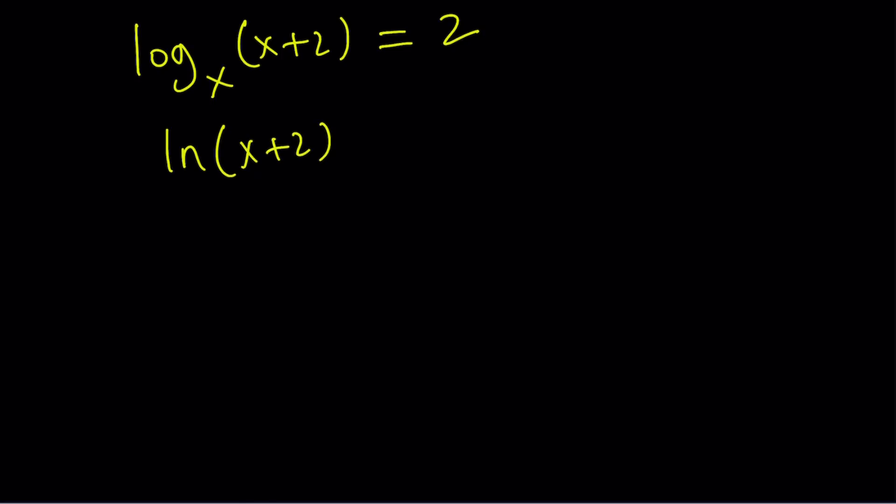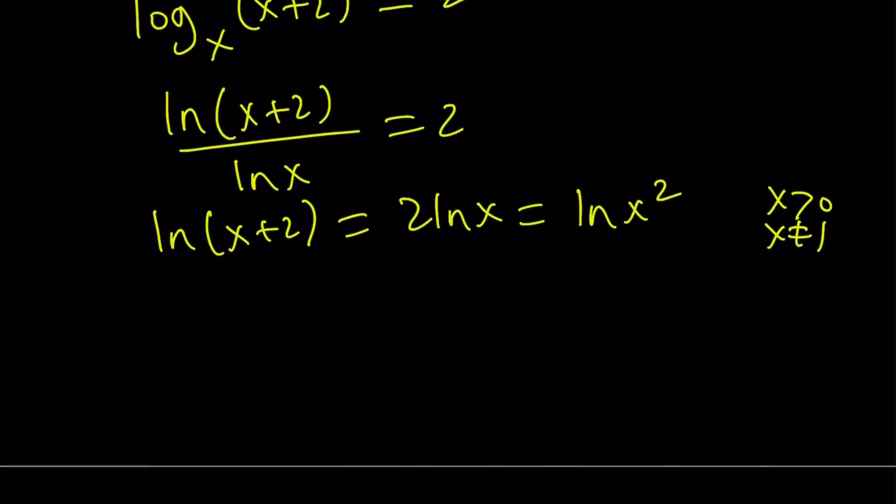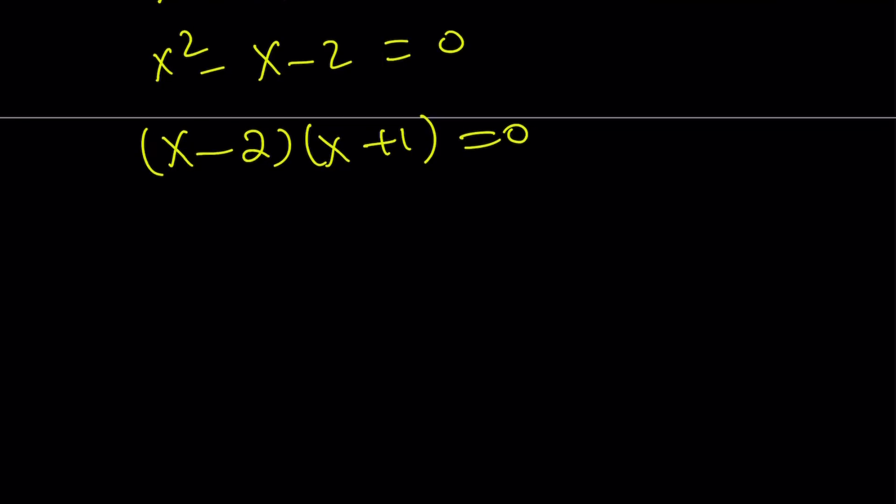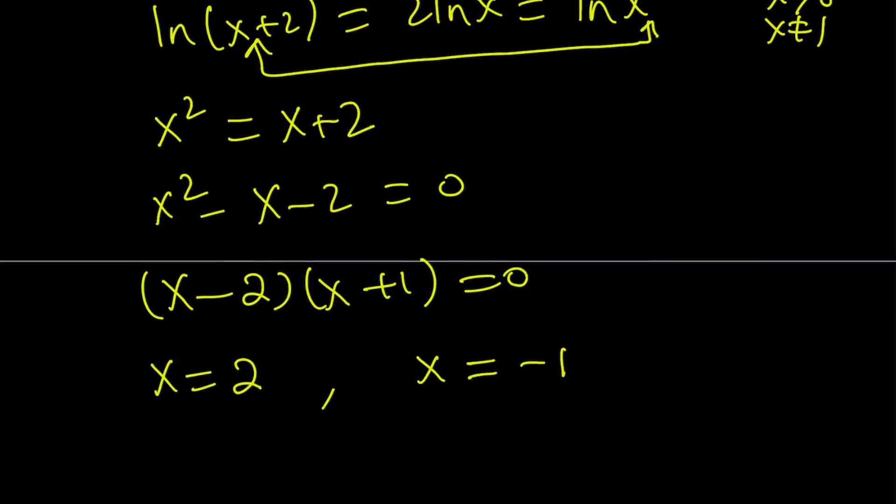I'm going to use the change of base formula here. So, I'm going to write it as ln x plus 2 divided by ln x equals 2. And I'm going to cross multiply. ln x plus 2 equals 2 ln x, which can be written as ln x squared. Let's remember that x is positive and different from 1. Under those conditions, this is an identity. And from here now, we can compare the insides. And this is going to give us x squared equals x plus 2, which is a quadratic equation. And then it can be written as x squared minus x minus 2 equals 0. And that can be factored as x minus 2 times x plus 1 equals 0. Obviously, this quadratic equation has two roots.